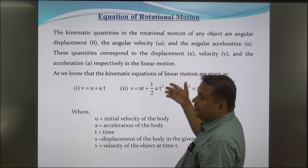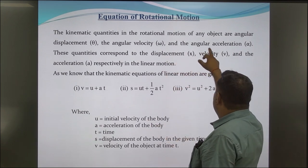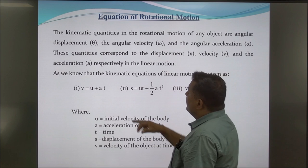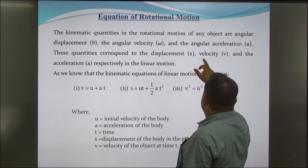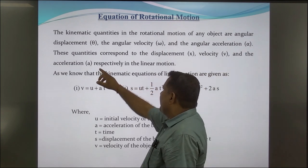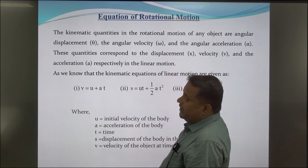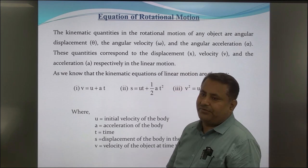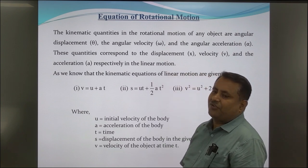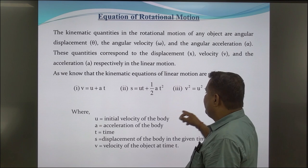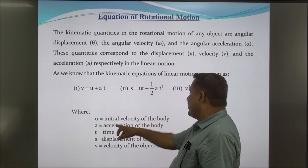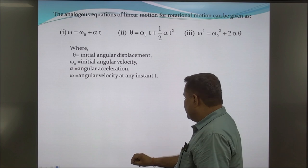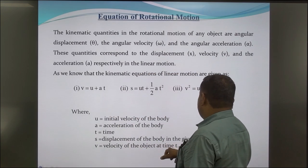Equations of translational motion. The kinematic quantities of rotational motion of any object are angular displacement, angular velocity, and angular acceleration. These quantities correspond to displacement x, velocity v, and acceleration a respectively in linear motion. The kinematic equations of linear motion are: first, V = u + at; second, s = ut + ½at²; third, V² = u² + 2as. Where u is the initial velocity, a is acceleration, t is time, s is displacement, and V is the velocity of the object at time t.